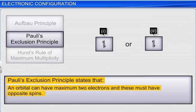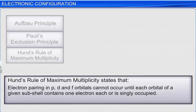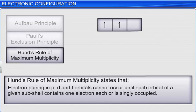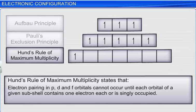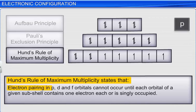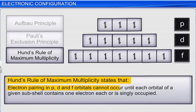And finally, Hund's rule of maximum multiplicity deals with the filling of electrons into equal energy orbitals of the same subshell. It states that electron pairing in p, d, and f orbitals cannot occur until each orbital of a given subshell contains one electron each, or is singly occupied.